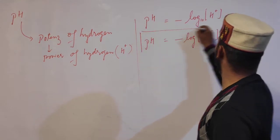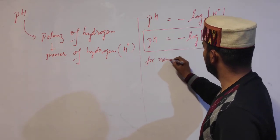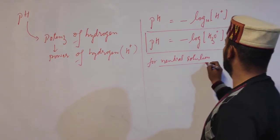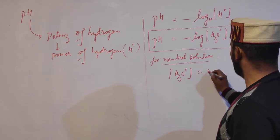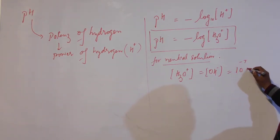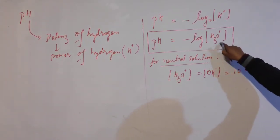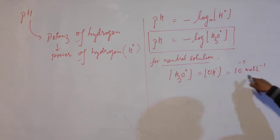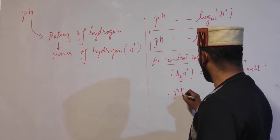Now let's calculate pH for a neutral solution. A neutral solution is one where the concentration of hydronium ions equals the concentration of hydroxyl ions. At 25°C, this concentration is 10⁻⁷ moles per liter. Note that concentration of hydronium ions must always be expressed in moles per liter.